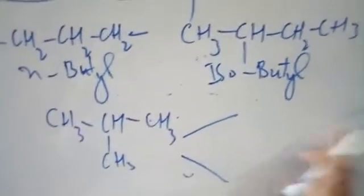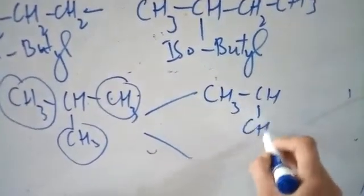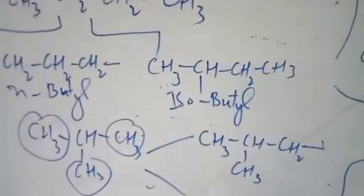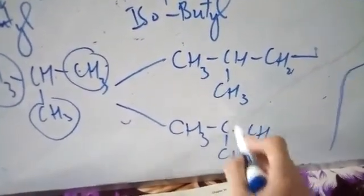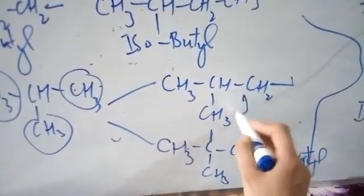For isobutane, we also have two possibilities. If we remove hydrogen from one of the three CH3 terminal groups, we will get the isobutyl radical. But if we remove hydrogen from the central carbon, we call it the tertiary butyl radical, because that central carbon is directly attached to three other carbons — making it a tertiary carbon.